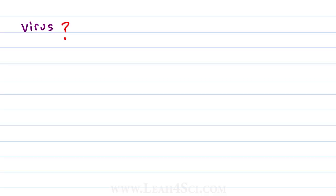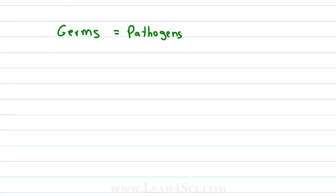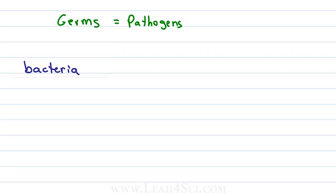When you hear the word virus, what's the first thing that comes to mind? Are you thinking infection, swine flu, coronavirus, a general contagious disease? Infectious agents that cause disease or germs are known as pathogens. Common pathogens can include bacteria, fungi, parasites — the small critters that cause infection — and viruses.